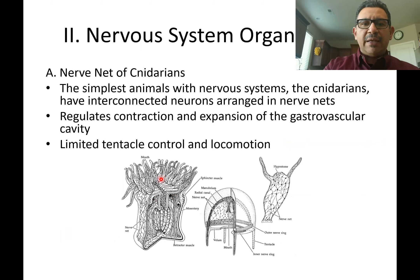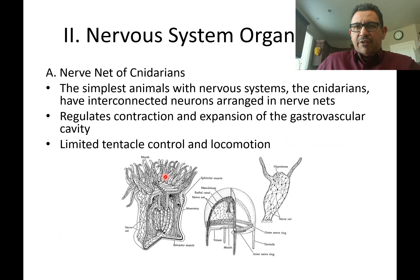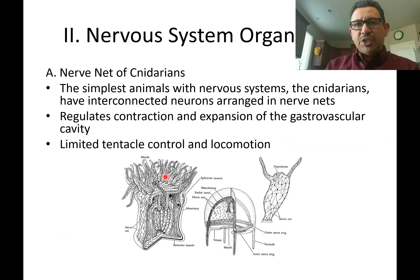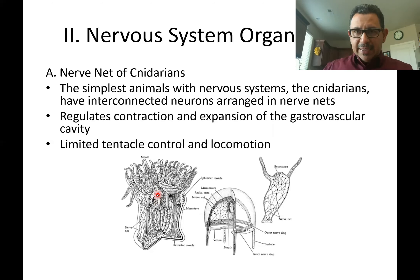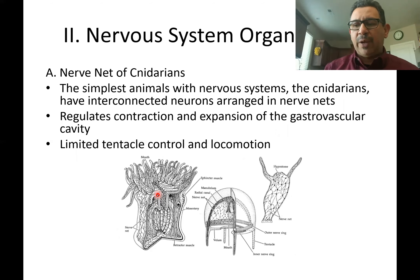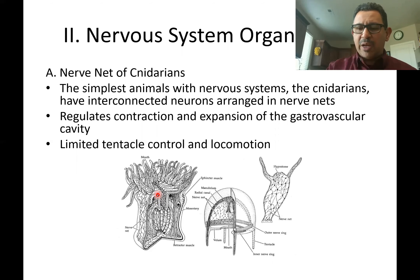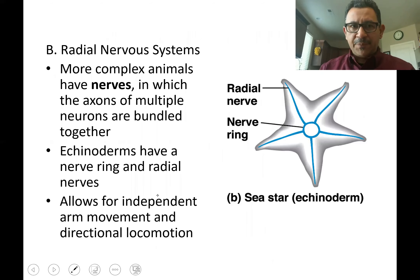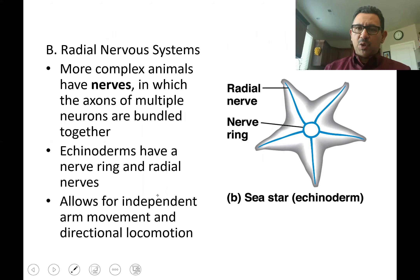Looking at the types of reactions cnidarians can have — something like a jellyfish filling its gastrovascular cavity and pushing water away to move, or an anemone ejecting water to make itself smaller and protect itself, with some limited movement of tentacles to bring food toward the mouth. In contrast, in the radial nervous system of echinoderms there is more controlled, independent arm movement.